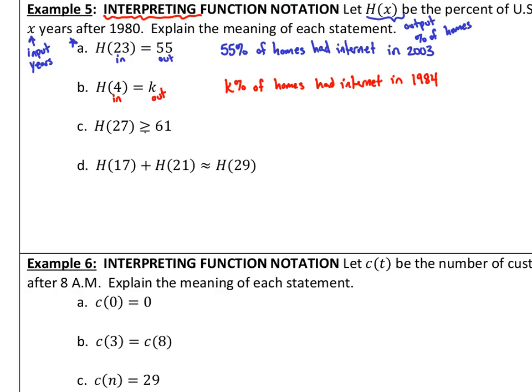Next, notice that we have a greater than or equal to symbol. Instead of just an equals. So, instead of saying exactly 55% of homes, we're inputting 27 years. Our output is just over 61, right? 61% or more. So, I would just say, not over, but at least 61% of homes had Internet in. And let's see, 27 years after 1980 would be 2007, wouldn't it? And by using the words at least, that means that I could be talking about 61% or anything higher. At the least, it could be 61, but it could be greater than that as well. There's the greater than symbol.